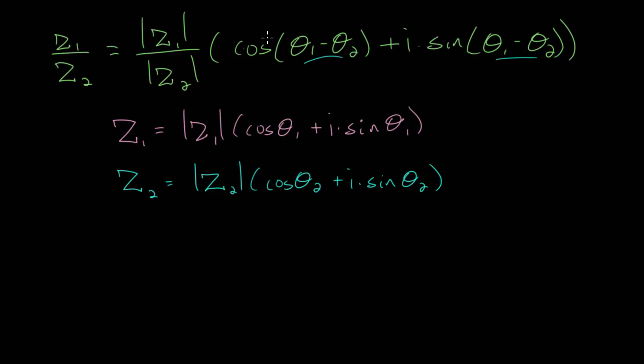One way to interpret this formula is that this is really just another complex number, z3, where this quotient here is the magnitude of z3. Let me rewrite that. And these angles on the inside, this is really just the angle for z3, which we can call theta3. So when dividing complex numbers graphically, we divide their magnitudes and we subtract their angles.